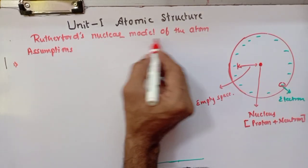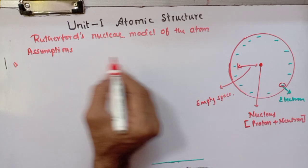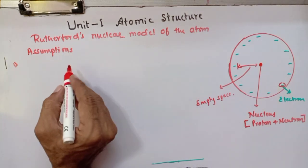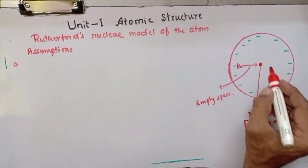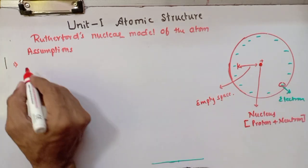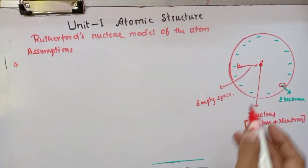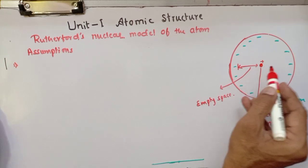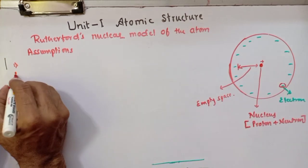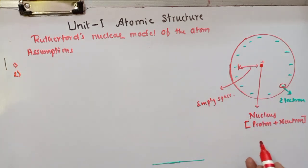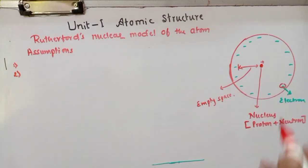Let us start with Rutherford's nuclear model. According to Rutherford, the atom looks as shown in the figure. The first assumption is: an atom consists of a very minute positively charged body located at its center, known as the nucleus. The second assumption is: since the mass of protons and neutrons contribute to the mass of the atom, the entire mass of the atom resides in the nucleus.